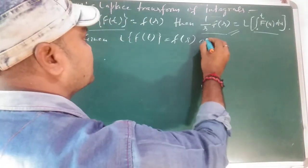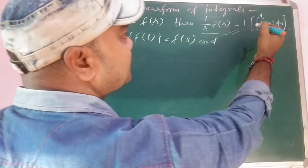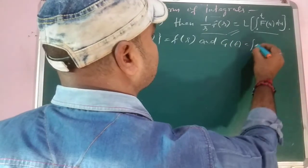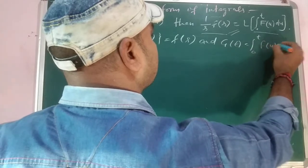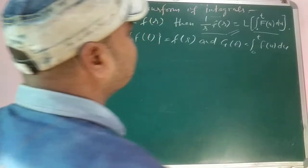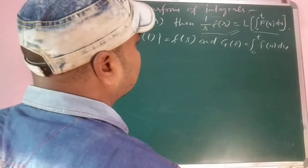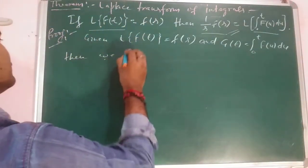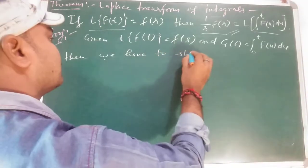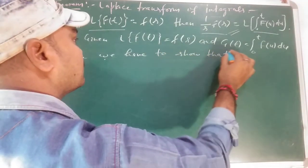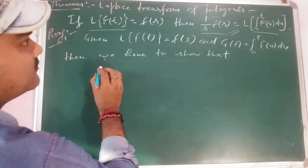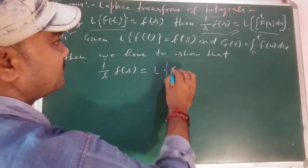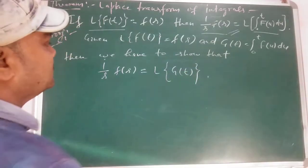We take this integral as g(t), so g(t) = ∫₀ᵗ f(u) du. We have to show that (1/s)·F(s) = L{g(t)}.